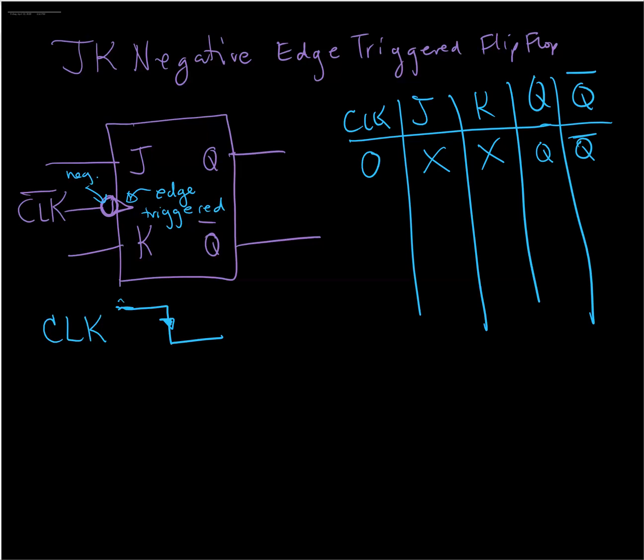When the clock is making its negative edge trigger, then the states of J and K are going to be considered. So actually, let me put the set condition after the hold condition.